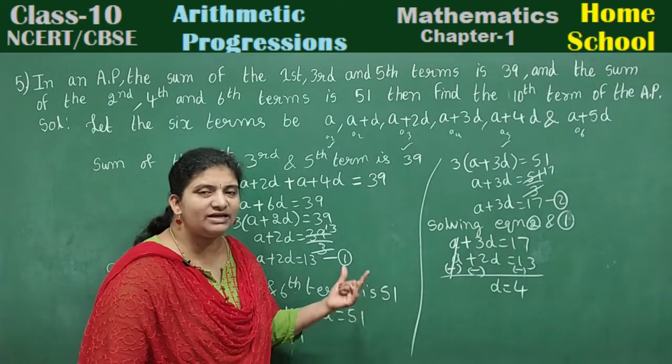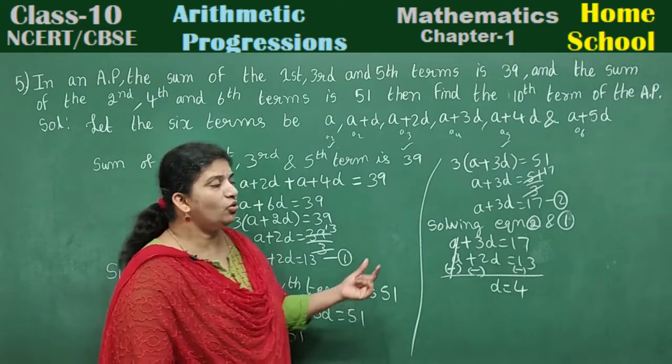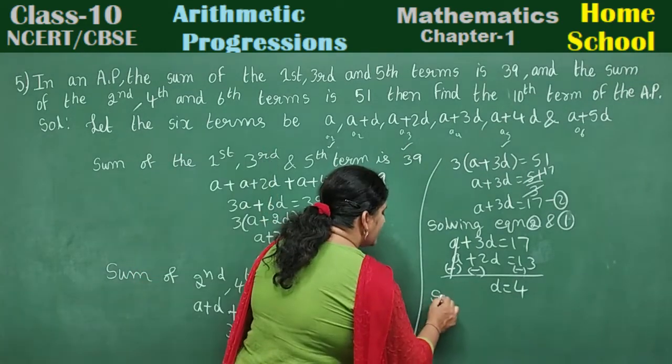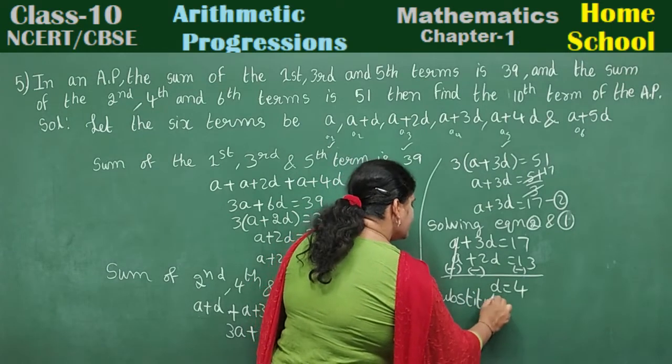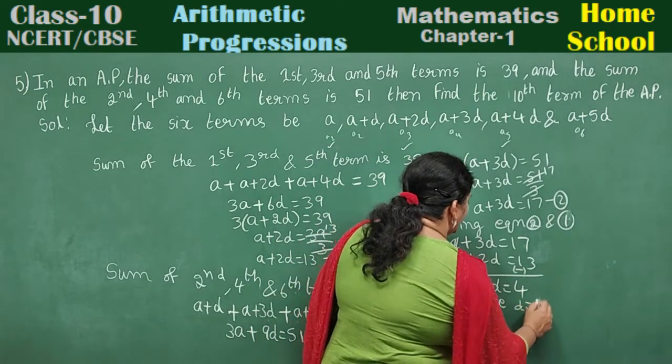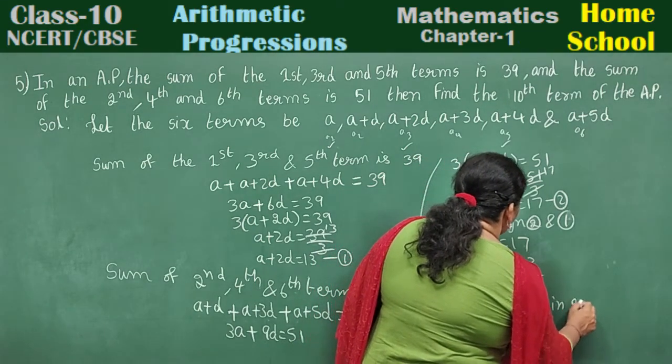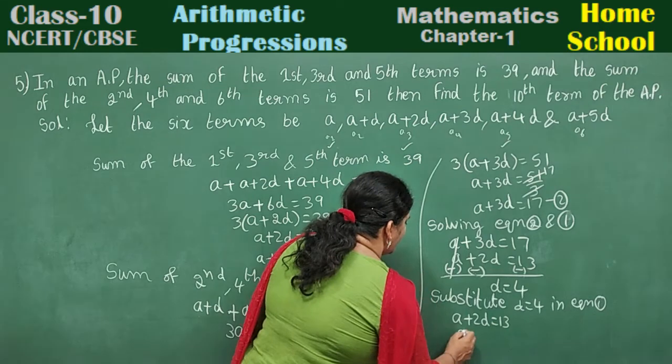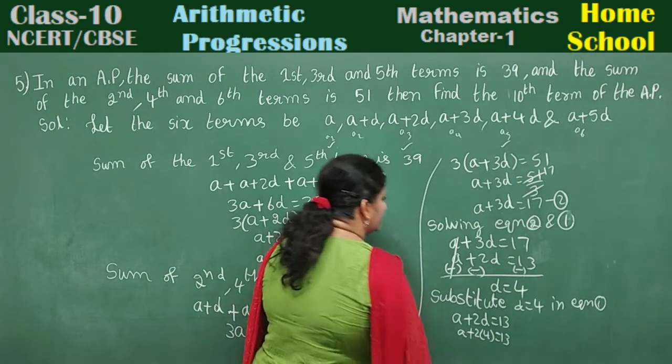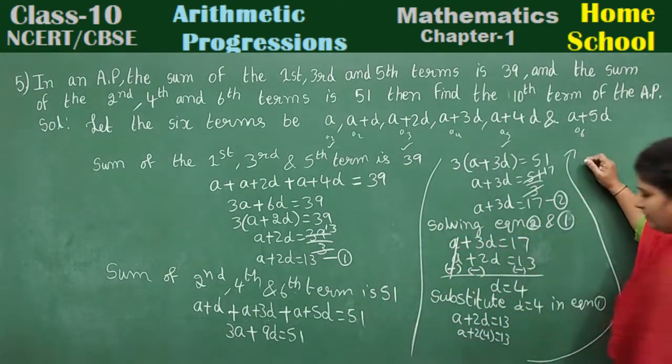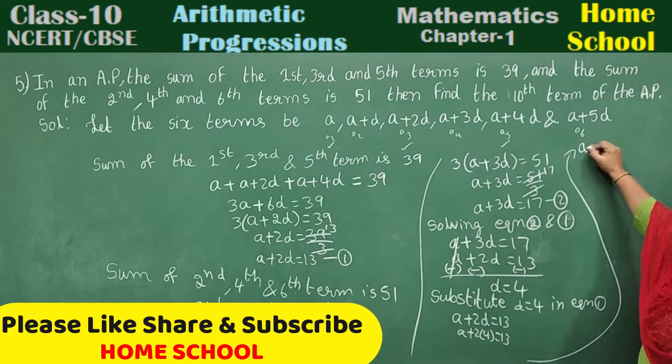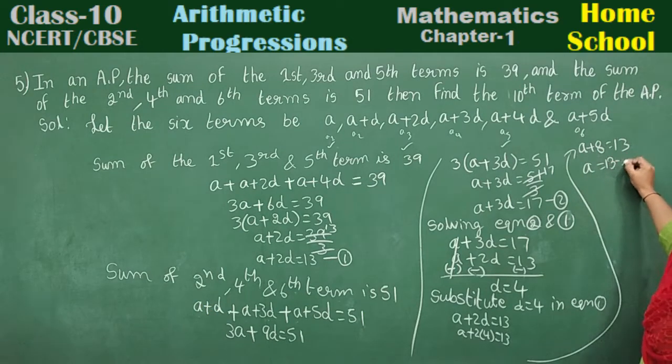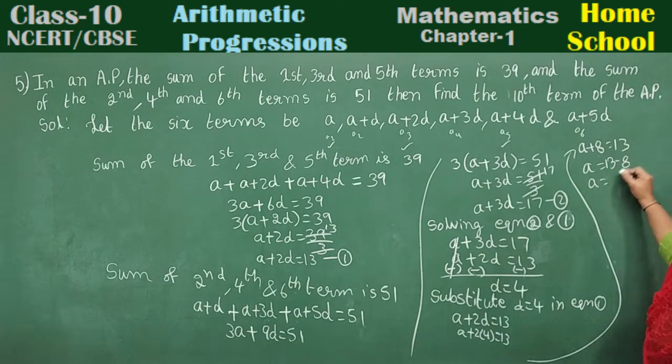On substituting d equals 4 in equation 1: a plus 2d equals 13. A plus 2 into 4 equals 13. A plus 8 equals 13. Transpose: a equals 13 minus 8, which is 5. Therefore, a equals 5 and d equals 4.